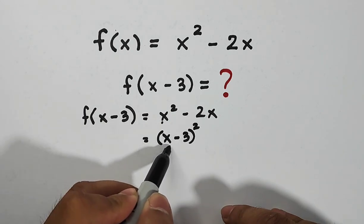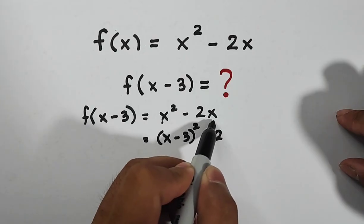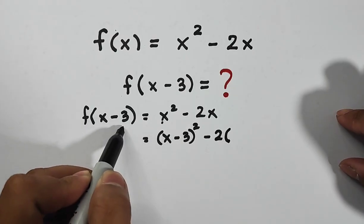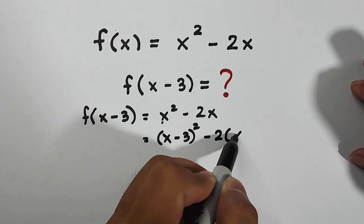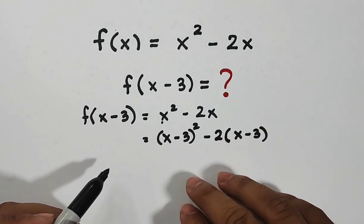So your x became x minus 3. Next, minus 2, then you have your x times, so that becomes x minus 3. So all you need to do here is to simplify or multiply this part.